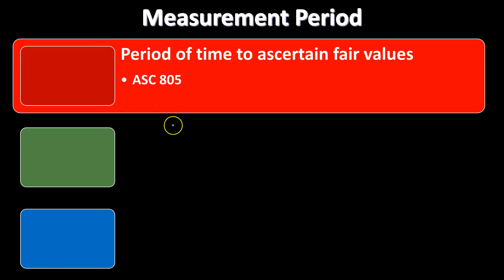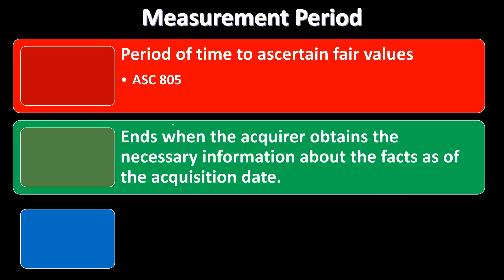We have the measurement period. The period of time to ascertain fair values can be found in ASC 805. It ends when the acquirer obtains the necessary information about the facts as of the acquisition date. So we set the acquisition date, and then the measurement period is the time it takes to get the information we need. Different types of assets take different effort to value — cash is easy, but property, plant, and equipment, buildings, and so on are more difficult and may need appraisals.